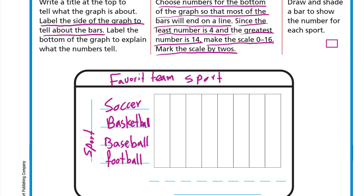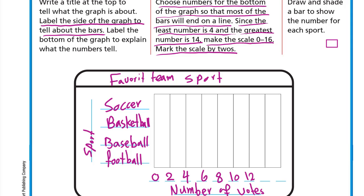Down here we write 'Number of Votes,' and we start counting by twos: 0, 2, 4, 6, 8, 10, 12, 14, 16.